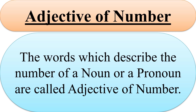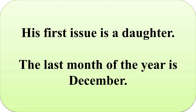Number three is Adjective of number. The words which describe the number of a noun or a pronoun are called Adjectives of number. For example: 'His first child is a daughter' and 'The last month of the year is December.' In these sentences, 'first' and 'last' are describing the number of the nouns 'issue' and 'month'. So, they are Adjectives of number.